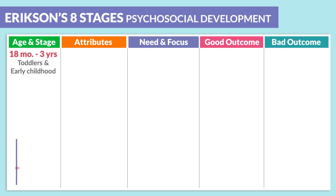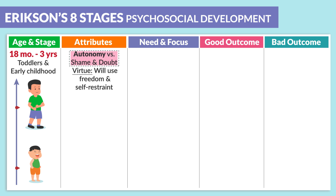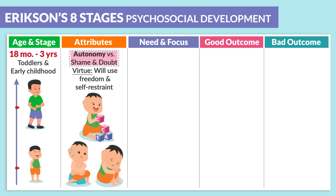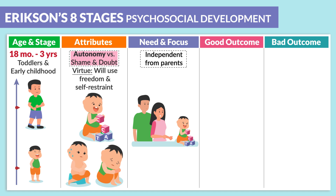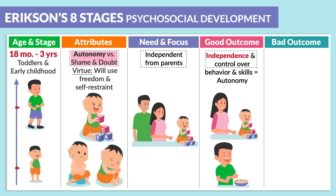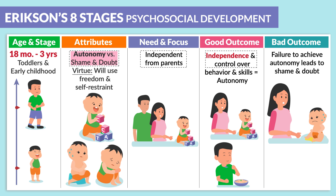The next stage is 18 months to 3 years old — our toddlers and early childhood. The attributes, as mentioned by ATI, are autonomy versus shame and doubt. The virtue is the will and use of freedom, as well as self-restraint. The need and focus is independence from the parents. The good outcome is independence and control over behavior and skills. The bad outcome is failure to achieve autonomy, leading to shame and doubt.